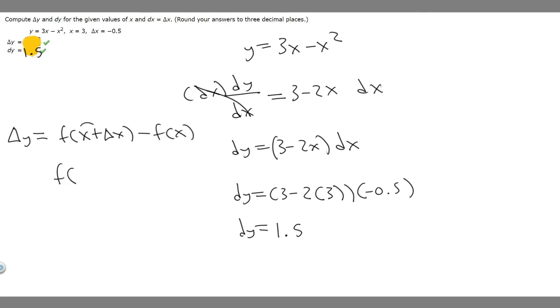We go ahead and solve this. So f of x plus delta x, x is 3, and then delta x is minus 0.5. So this is just going to become 2.5. So f of 2.5 minus f of x, which is 3.